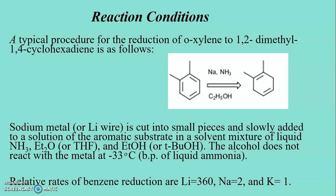Normally, alcohols react with sodium metal to liberate hydrogen. But alcohol does not react with the metal at minus 33 degrees Celsius, which is the boiling point of liquid ammonia. Now let us compare the relative rates of Birch Reduction. With lithium the rate is very high — 360. With sodium the rate is very slow, and with potassium the rate is also very very slow.